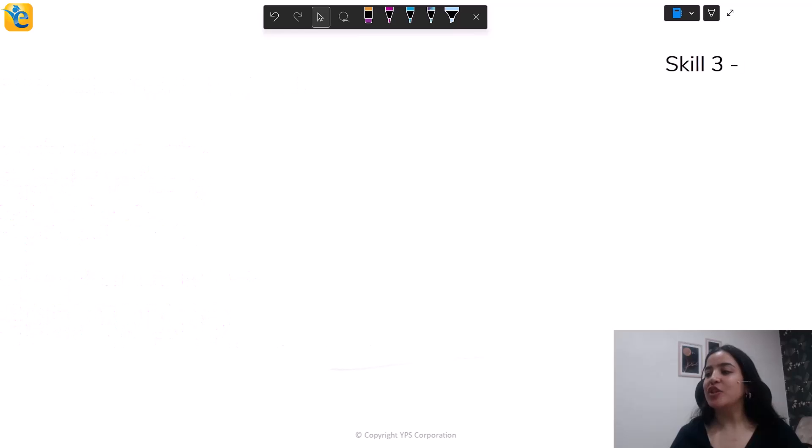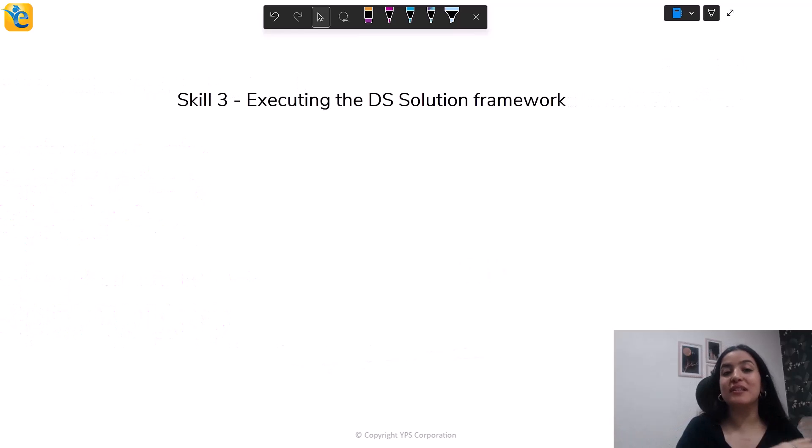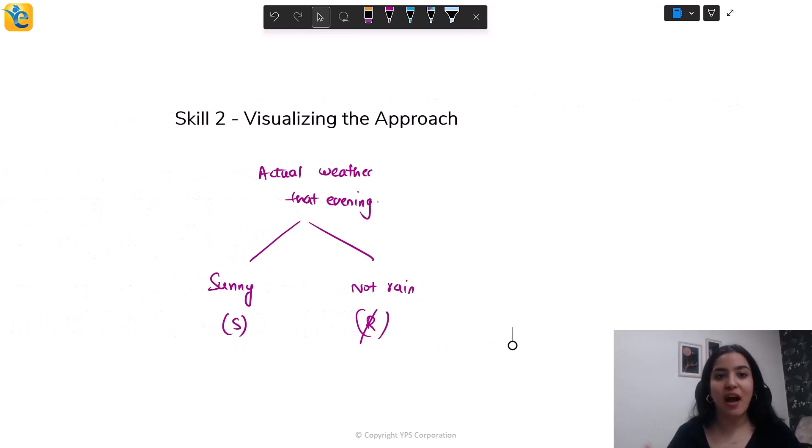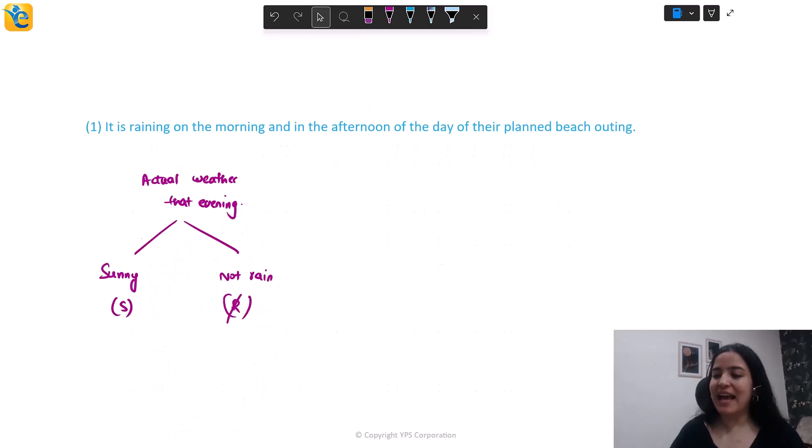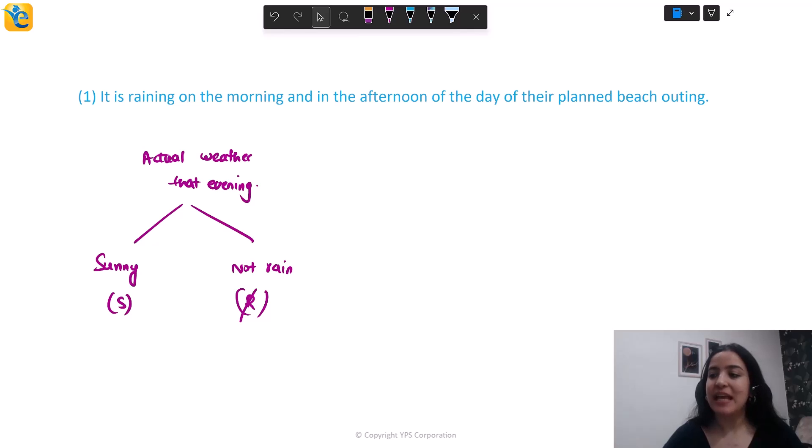Now comes the final skill, which is where you need to execute everything. You need to execute this visualized approach that you just came up with. And this execution needs to be done using the data sufficiency solution framework. Let's actually see this in action. So we know that this is going to be our approach. We need to know the actual weather tomorrow evening, that evening on both of these accounts. So I will keep this approach in front of me as I analyze my statements one by one. This is the first statement. It's telling me that it is raining on the morning and in the afternoon of the day of their planned beach outing. Okay, so it is raining. It is giving me actual information for sure. But does it tell me about the actual weather at the time that I'm interested in, that evening? No, it talks about the morning, the afternoon, but not the evening, which means statement one alone is insufficient. And so if you look at your statements, you already can reject choices A and D.